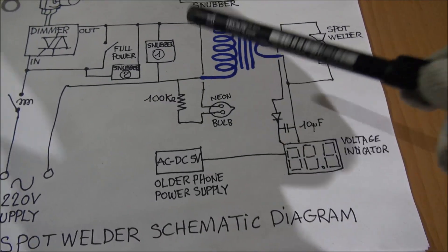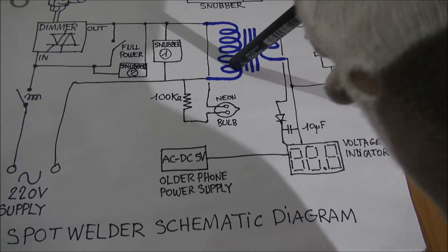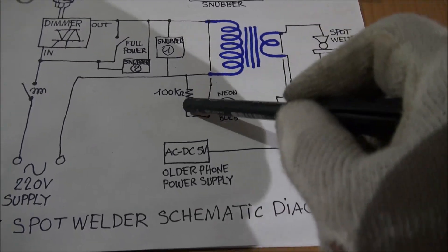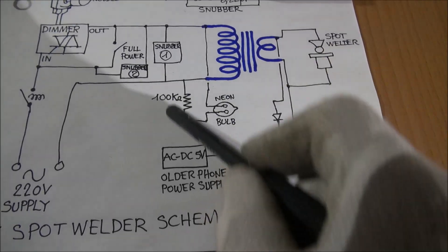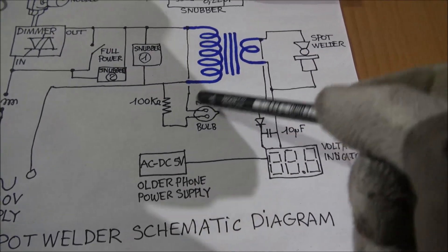Here you have a neon bulb to show the electricity coming into the primary of the transformer with a 100k resistor. You can make this neon bulb or not, you do exactly what you want.